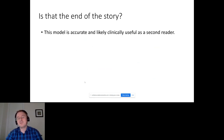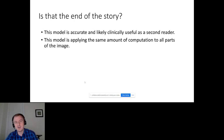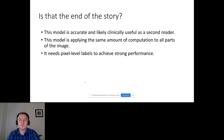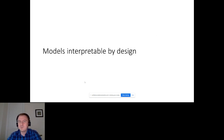But this is not the end of the story. Even though this model is accurate and is likely clinically useful as a second reader, it still has some flaws. It applies the same amount of computation to all parts of the image, which is not necessarily an optimal solution. Because these are very large images, applying the same computation everywhere means we just cannot have a very complex network. This model also needs pixel-level labels to achieve strong performance, which is not always easy to get, and it doesn't really explain why it makes a particular prediction. I think you would all agree that it's hard to trust something you just don't understand. For that reason, we built another category of models which I call models interpretable by design.